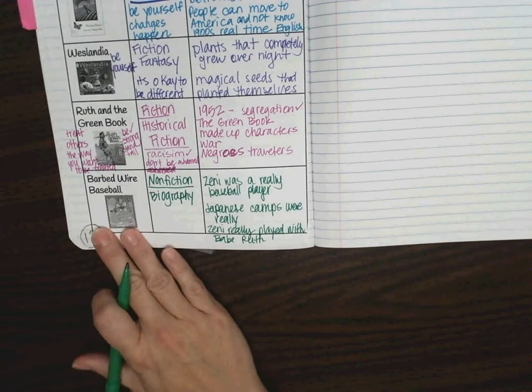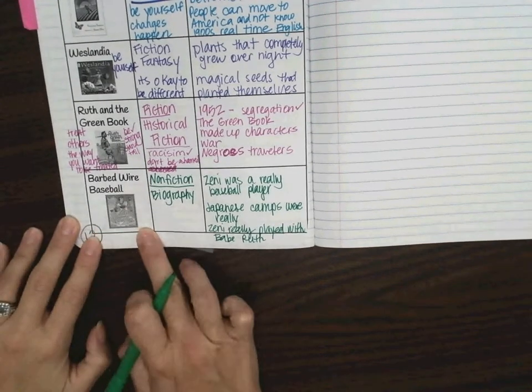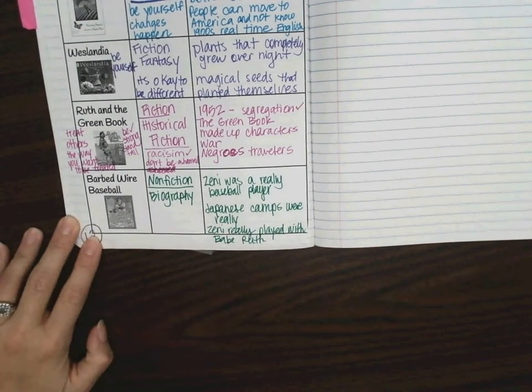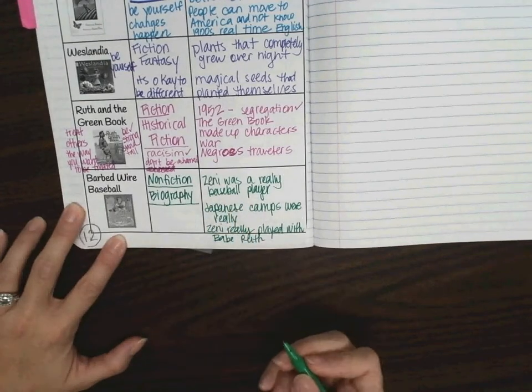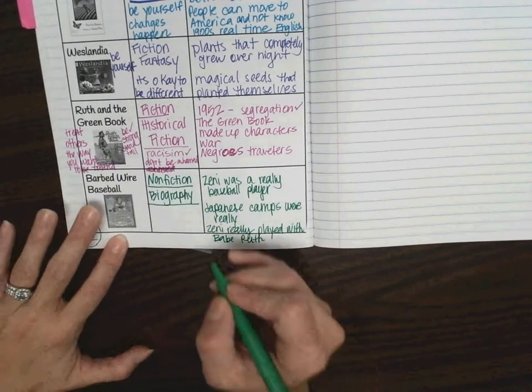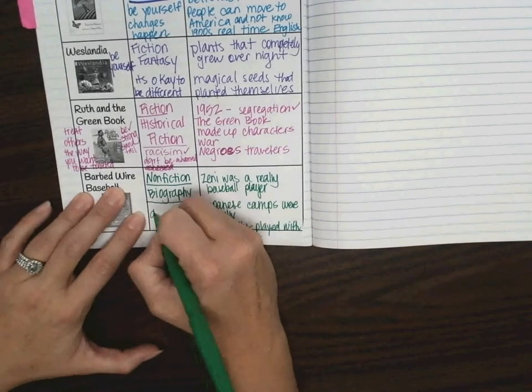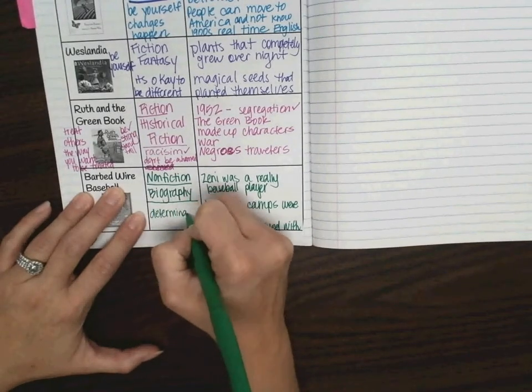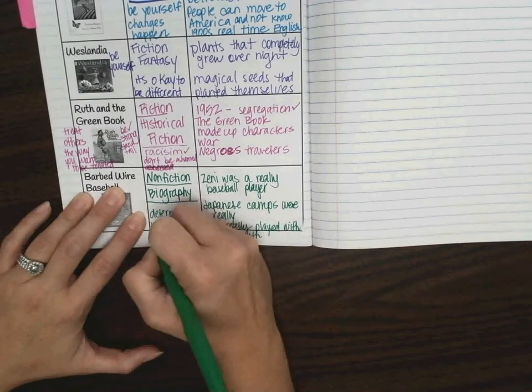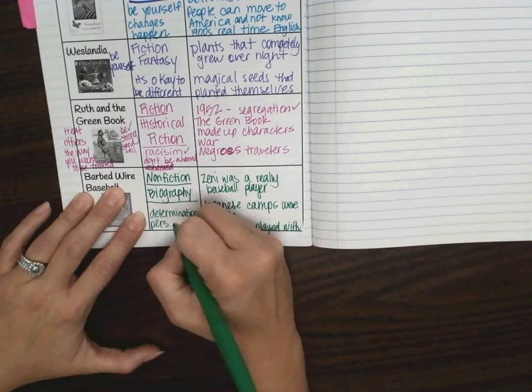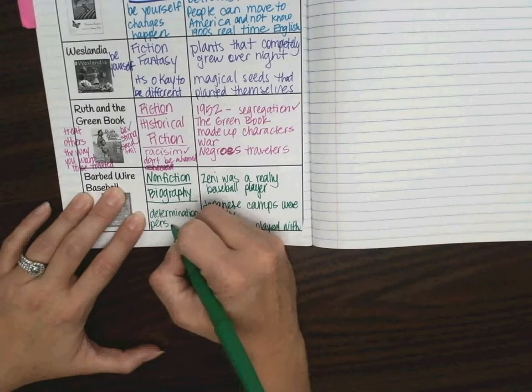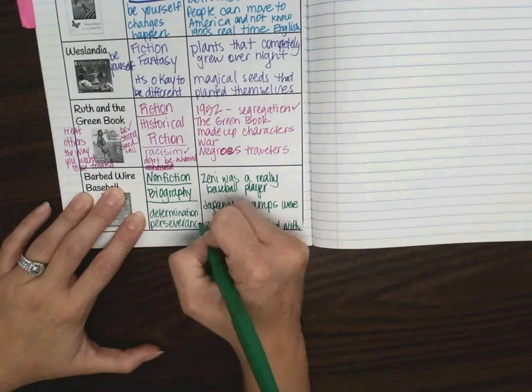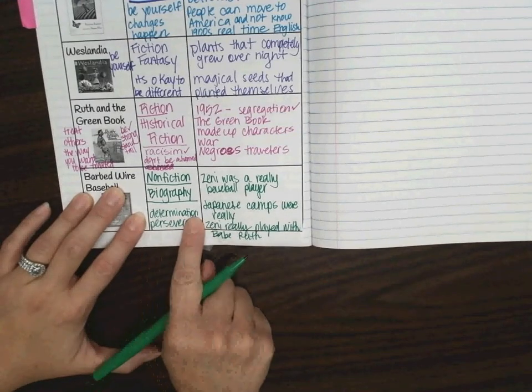Now, as you think about this, what could be some themes? Because this is going to help you on that worksheet that you have to do, or not really worksheet, your reader's response that you have to do with this. You can use some of these themes to guide you. Some of these themes could be determination, perseverance,